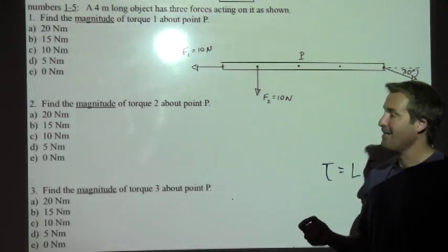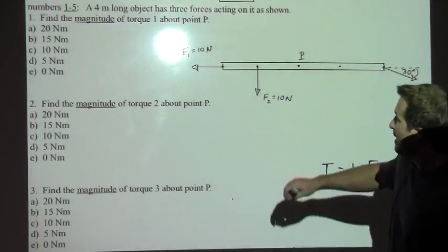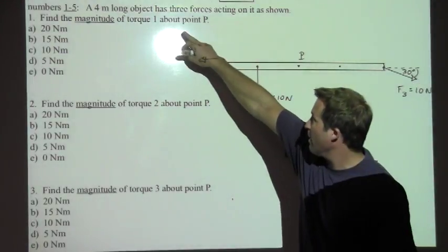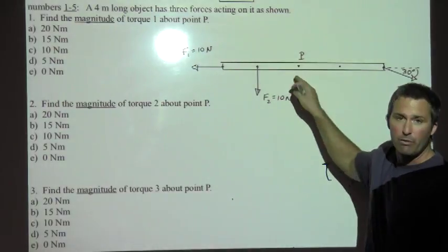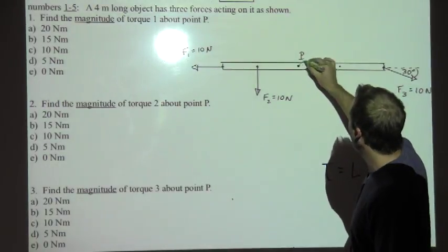First of all, there must be an axis point specified in order to calculate the torques. And there's some key words here. It says about point P. If we see those words about point P, it means choose this as our axis point.